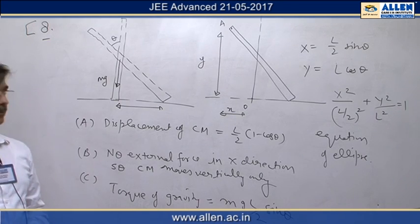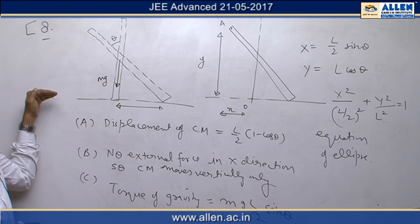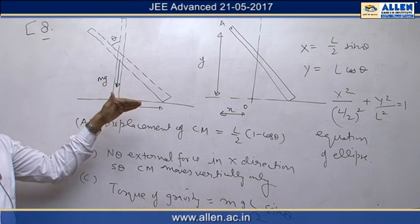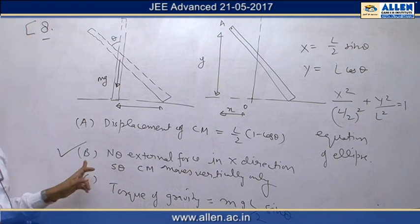Question number 8, in this question a rod falls on a smooth surface. Since there is no external force acting on the rod in horizontal direction, so center of mass of the rod falls vertically, so answer b is correct.